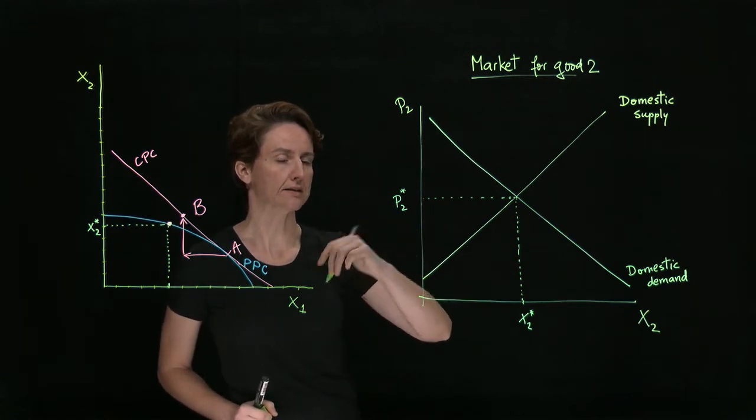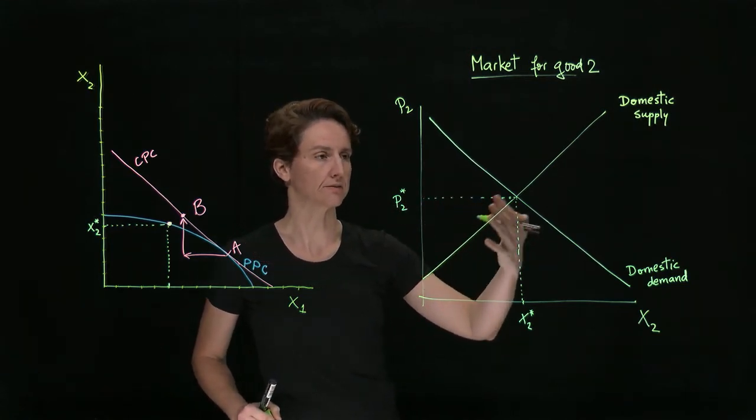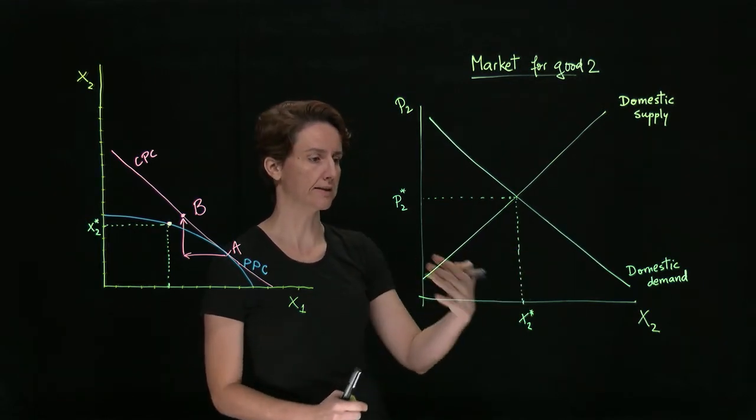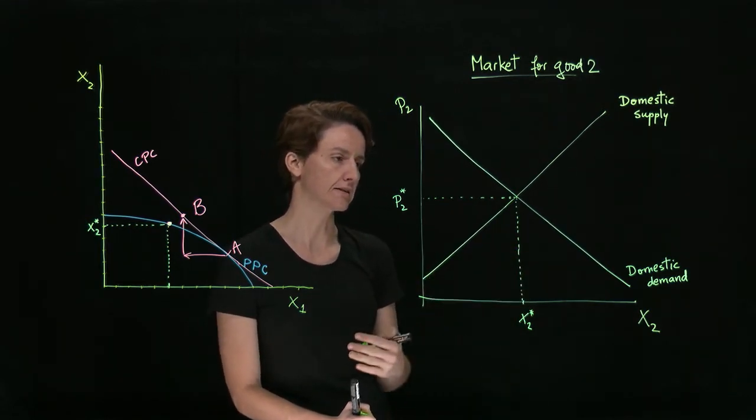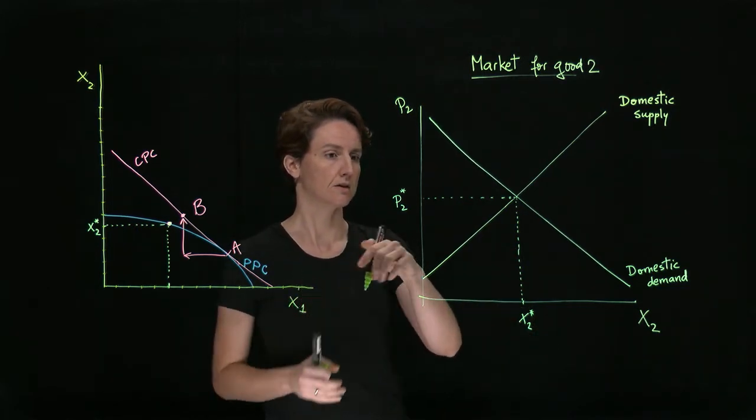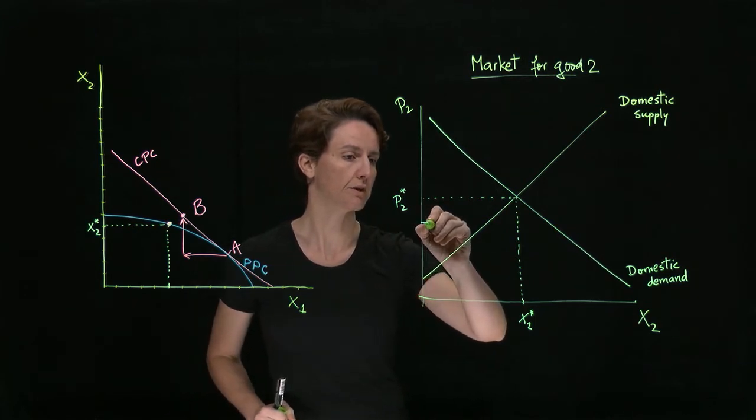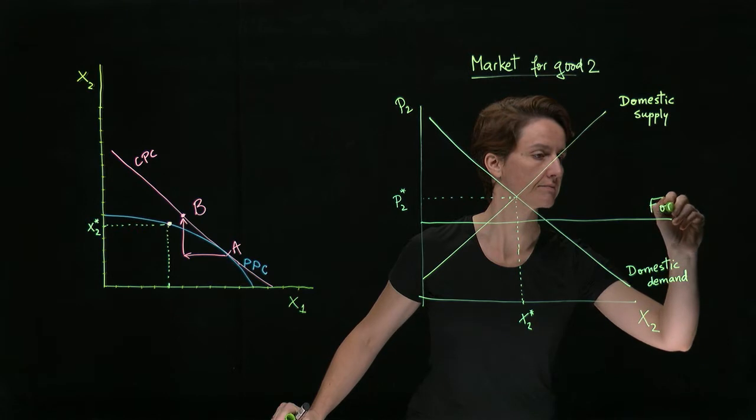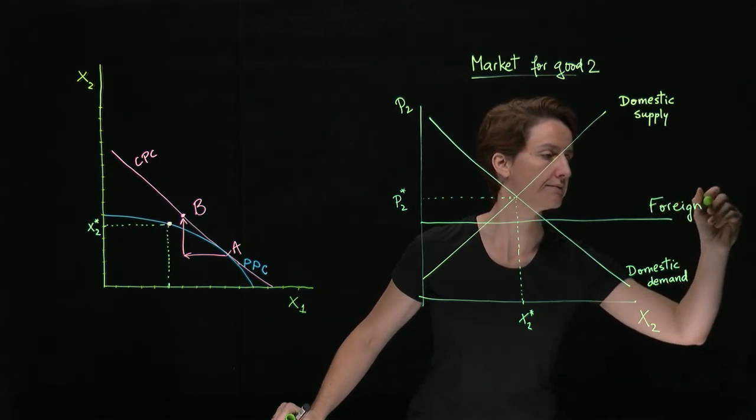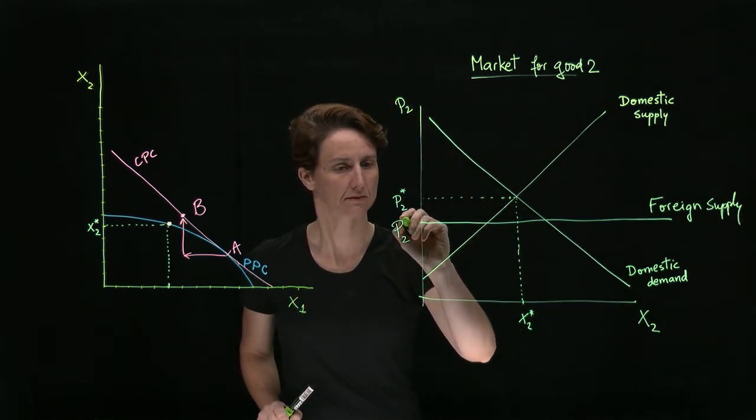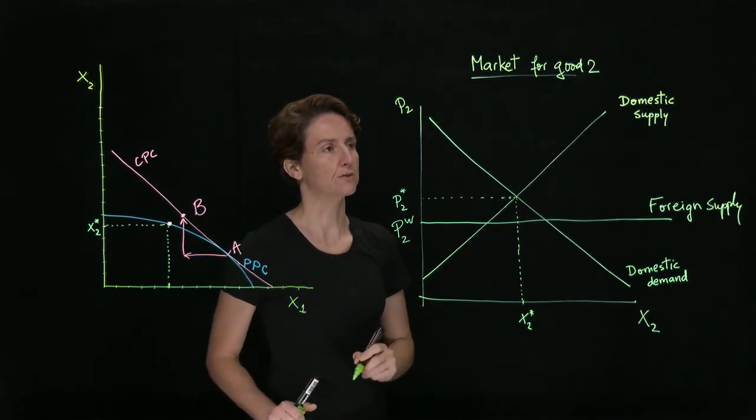So, if we think this country is smaller relative to the rest of the world, which is an assumption we make explicitly whenever we give prices internationally as independent of what this country does, then we'll be able to show foreign supply as a horizontal line at the world price, P2W.